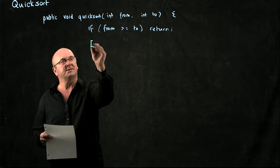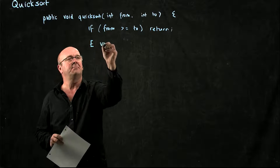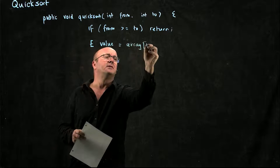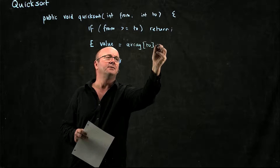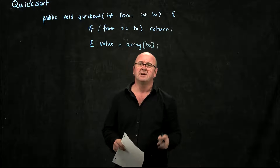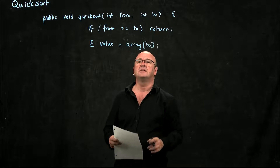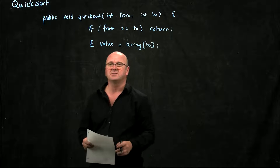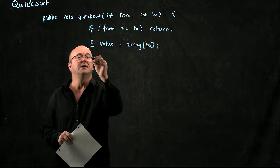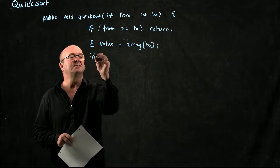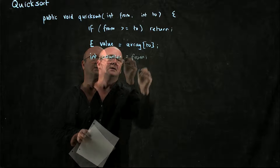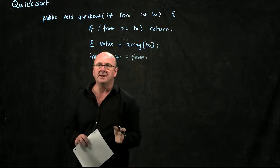Now what I'm going to do is remember the value of my pivot point. That's the largest thing in the region that I've got to sort — my slice of the array that I'm trying to sort. And I'm going to set my counter to the beginning of the array.